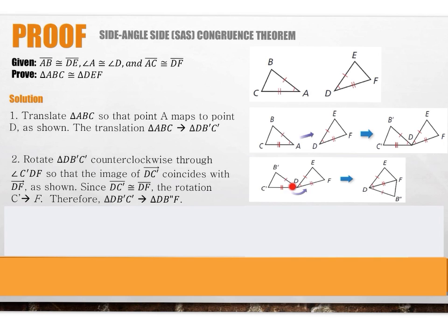Next step: rotate triangle DB prime C prime counterclockwise through angle C prime DF so that the image of ray DC prime coincides with DF. Since segment DC prime is congruent to DF, the rotation maps C prime onto F. Therefore, triangle DB prime C prime maps onto triangle DB prime F.